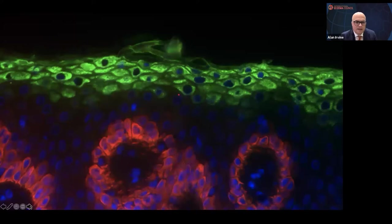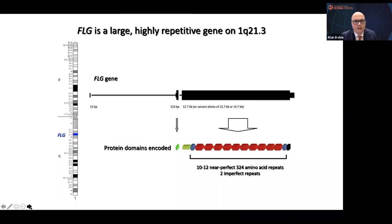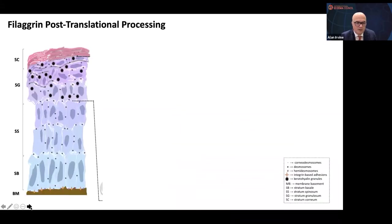Pivoting now to more common genetic abnormalities: filaggrin is the key highly expressed protein in the epidermis. Filaggrin is a large, highly repetitive gene in the epithelial differentiation complex on chromosome 1q21.3. It's got 11 or 12 nearly perfect amino acid repeats that vary in copy length, and it gets broken down to form individual monomers. You get a keratohyalin granule in the granular layer of the epidermis, which is dephosphorylated and snipped with caspase, yielding filaggrin monomers that aggregate all those keratin filaments.